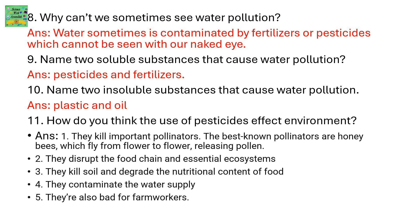How do you think the use of pesticides affects the environment? They kill important pollinators — the best known pollinators are honey bees, which fly from flower to flower releasing pollen. They disrupt the food chain and essential ecosystems. They kill soil and degrade the nutritional content of food. They contaminate the water supply and are also bad for farm workers.